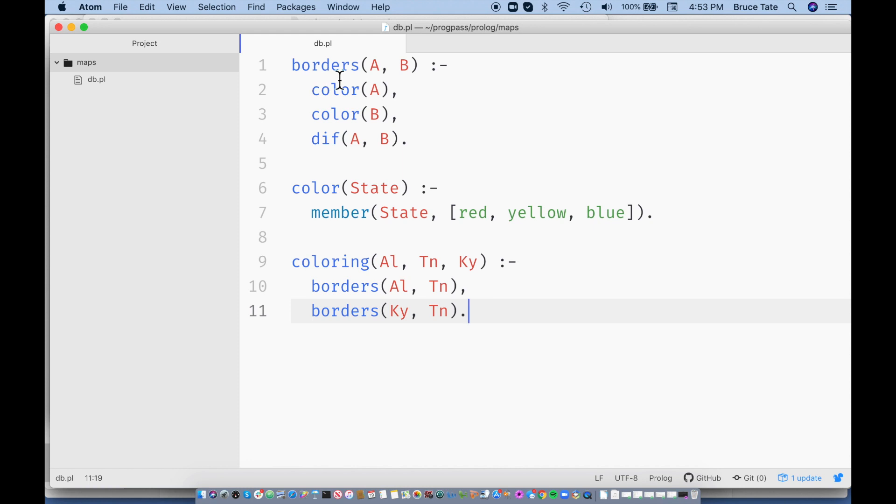And a bordering state means that A is a color, B is a color, and A and B are different. And a color basically means that whatever state we're coloring is a member of this list. And after we describe that problem, Prologue has everything it needs to build the solution.